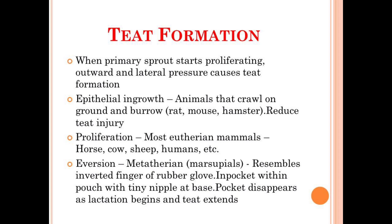The first type is the epithelial ingrowth type, found in animals that crawl on the ground and burrow in sand, like rats, mice, and hamsters. This type of growth reduces teat injury. The second type is the proliferation type, found in most eutherian or placental mammals like horse, cow, sheep, and humans. The third type is the eversion type, found in most metatherian or marsupial animals like kangaroos. It resembles an inverted finger of a rubber glove present within the pouch with a tiny nipple at the base. This inverted finger-like pocket appearance disappears as lactation begins and the teat extends.